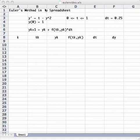Let's do a basic Euler's method in a spreadsheet. Differential equation, y prime equals t minus y squared. Over the time interval 0 to 1, stepping by 0.25 on the time axis each time.